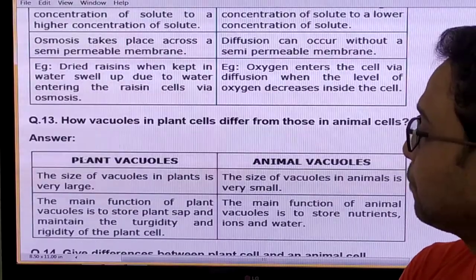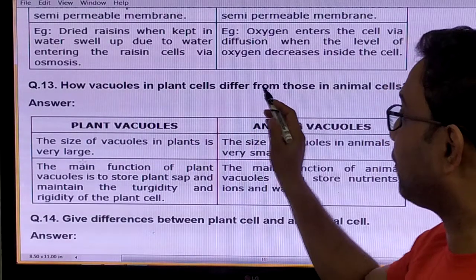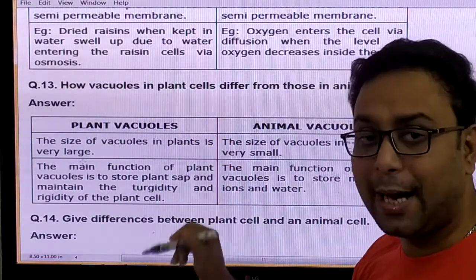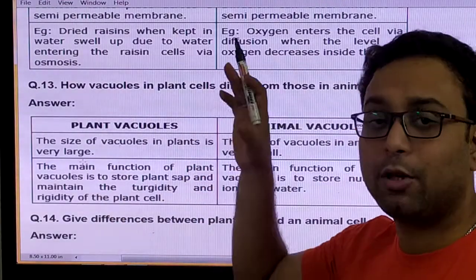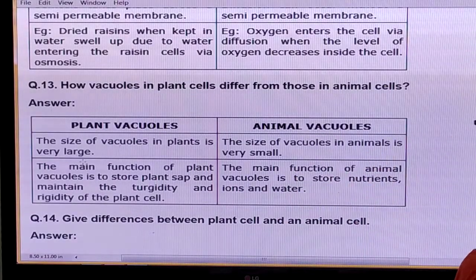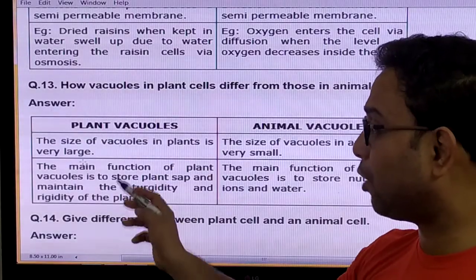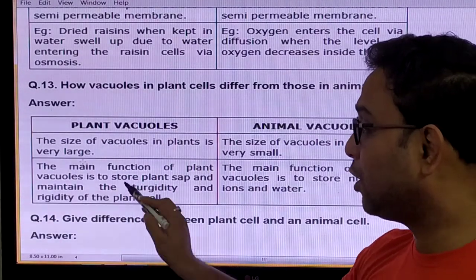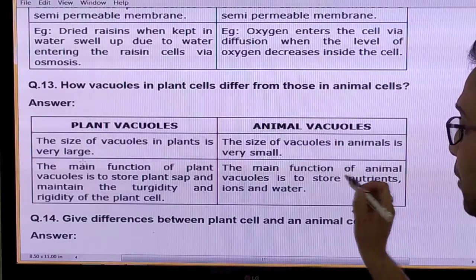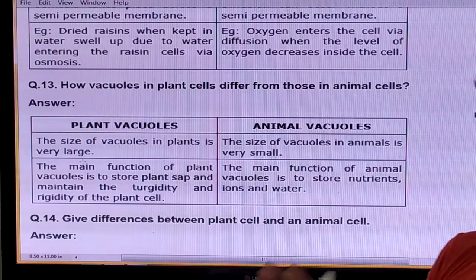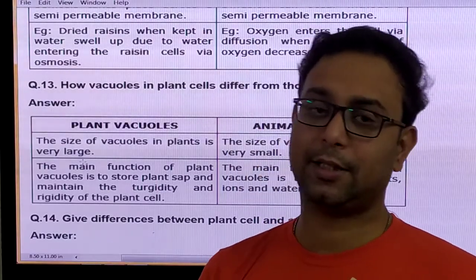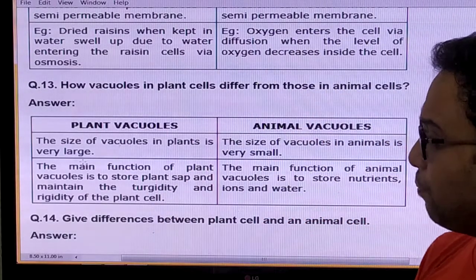Question: How do vacuoles in plant cells differ from those in animal cells? Plant vacuoles are very large in size; animal vacuoles are very small. The main function of plant vacuoles is to store plant sap and maintain turgidity. The main function of animal vacuoles is only to store nutrients, but they do not directly participate in maintaining turgidity. This is the most important final difference.